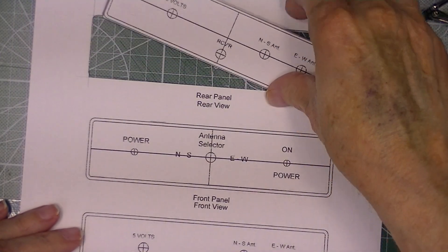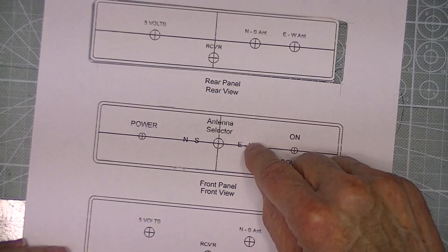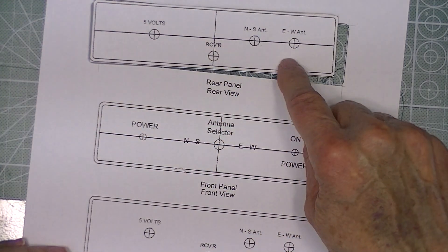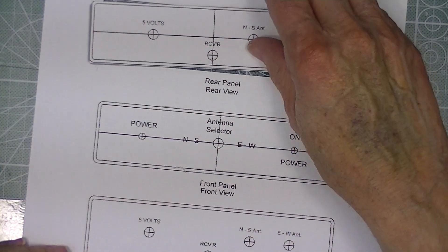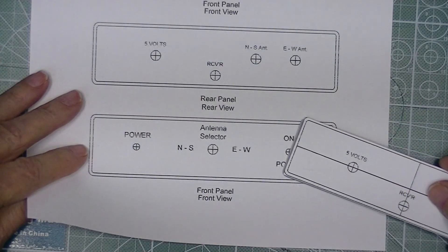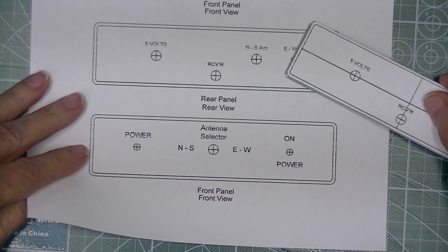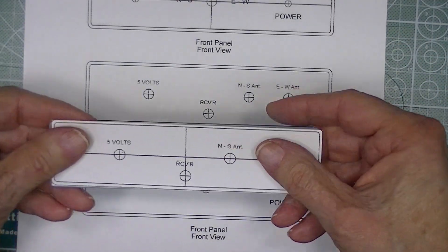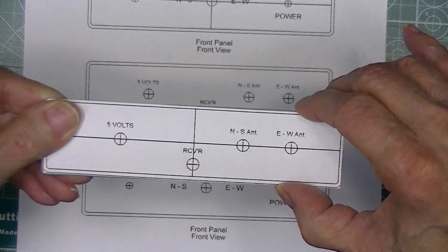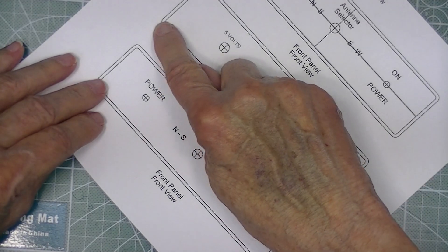As I usually do when I make these enclosures, I've drawn up a full size set of templates. The templates with the center lines on them are drilling templates or cutting templates. In this case everything is round. The other two templates will end up being the front and back labels of the panel. The cutting and drilling template I use the outside lines to cut. On the front and rear panels I use the inside lines.